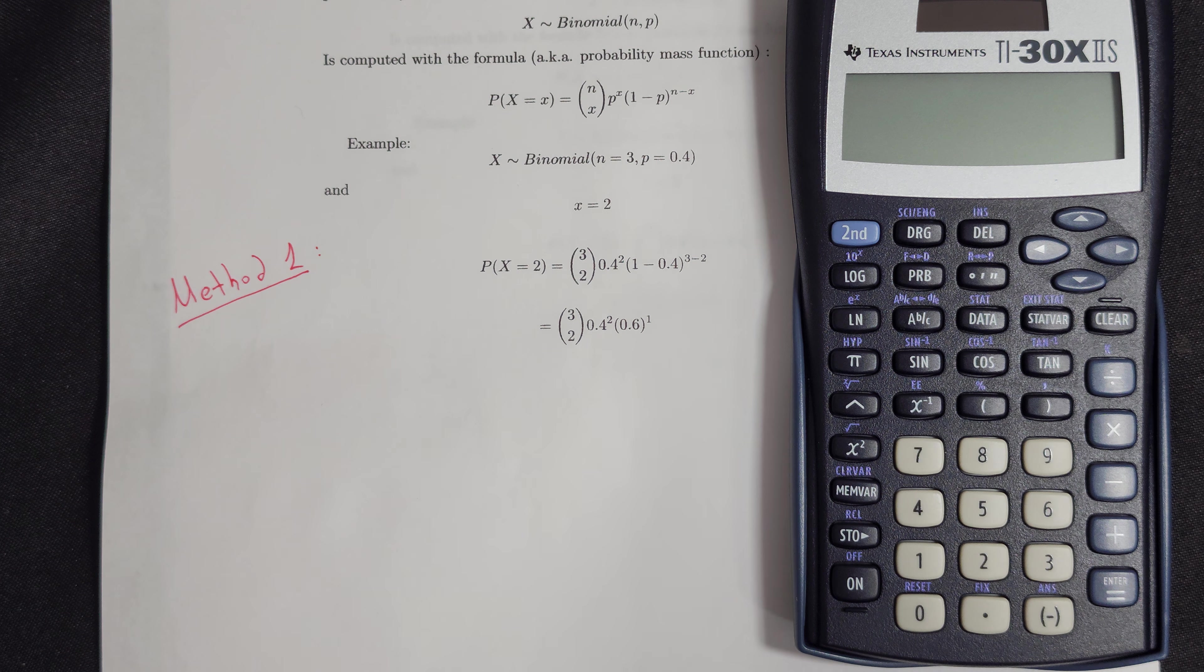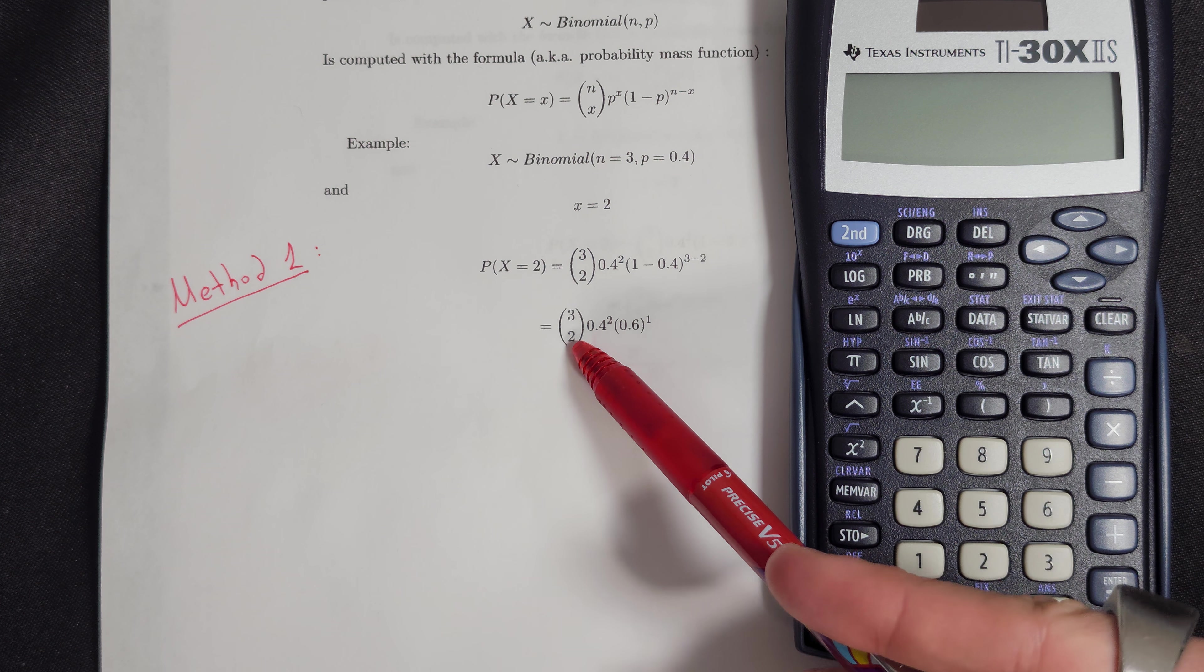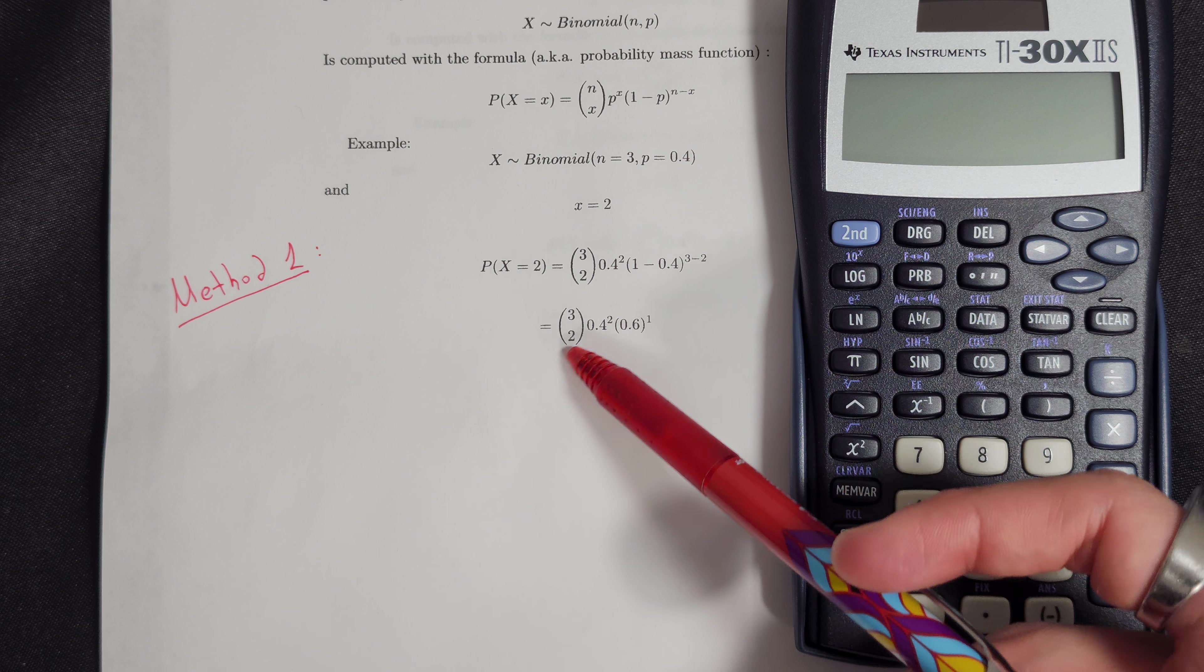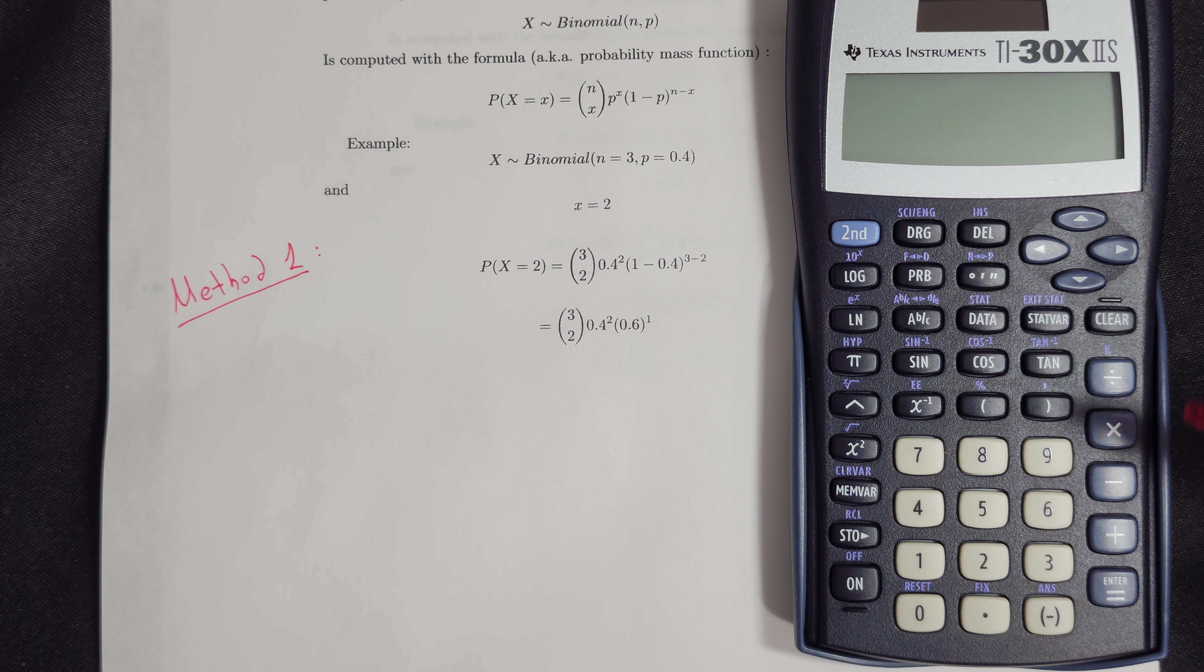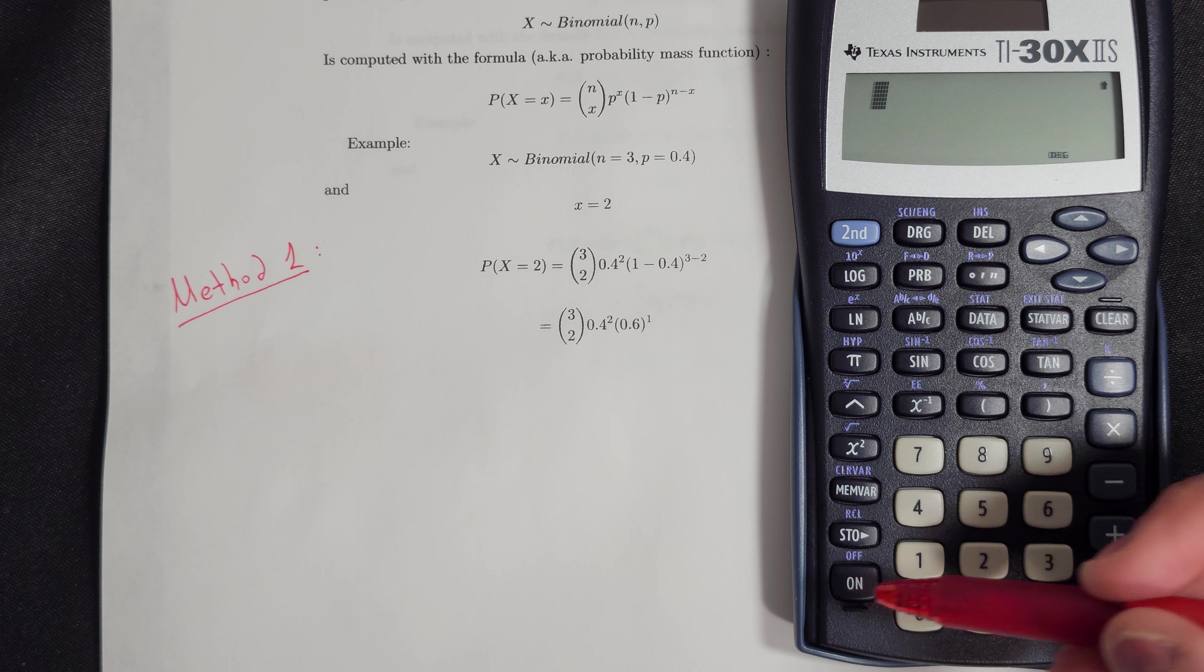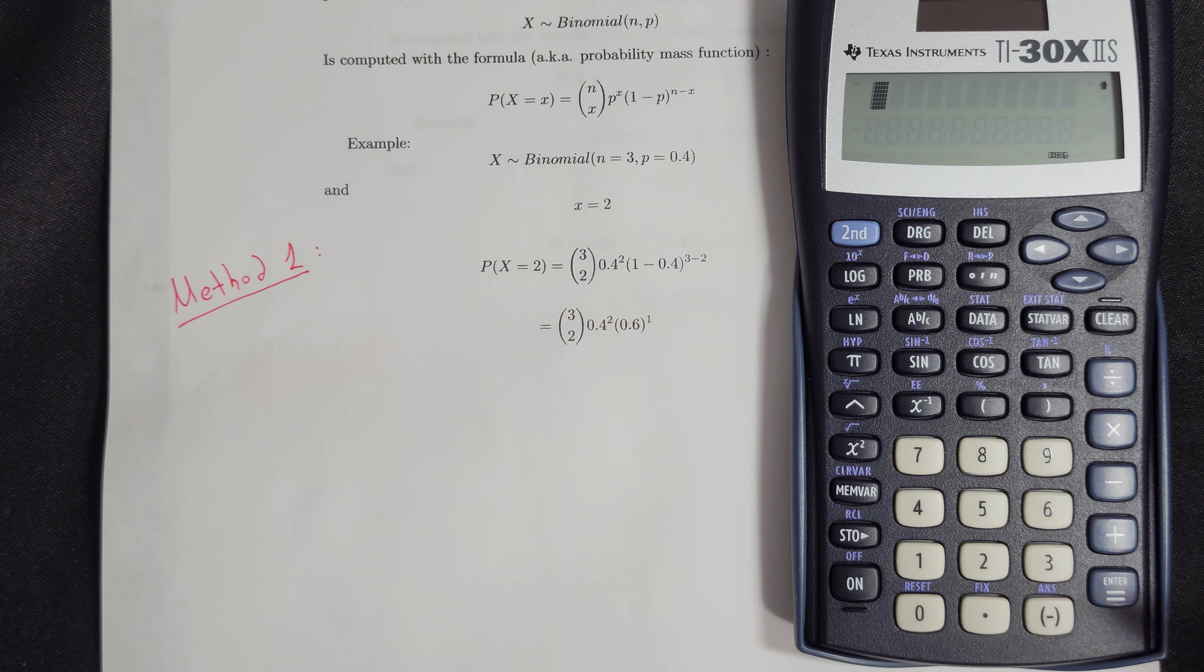So the first thing is that we want to calculate this first part, the 3 choose 2. We turn on the calculator and type the number on the top, the 3.